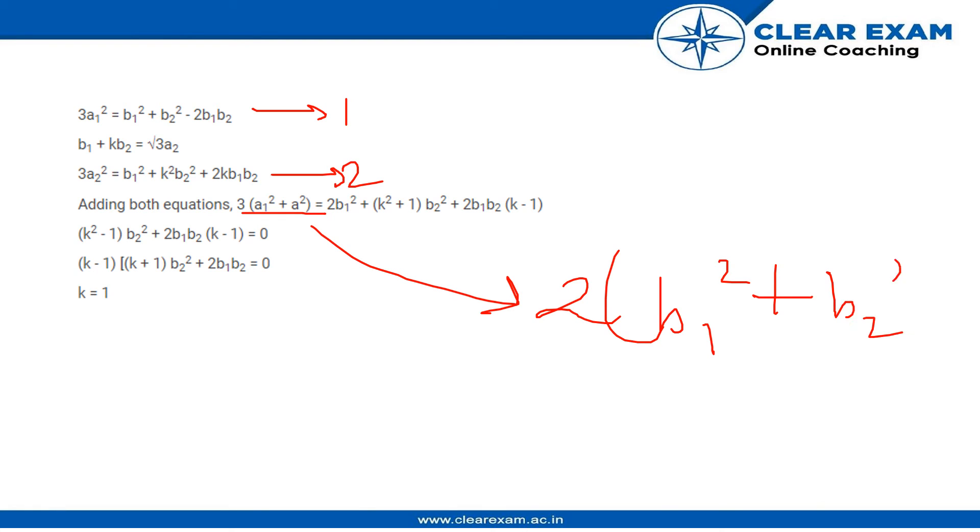Once we have that, we will factor out (k - 1) to get (k - 1)[(k + 1)b2² + 2b1b2] equals zero. We know that this term [(k + 1)b2² + 2b1b2] is not equal to zero.